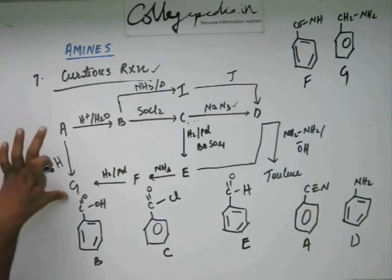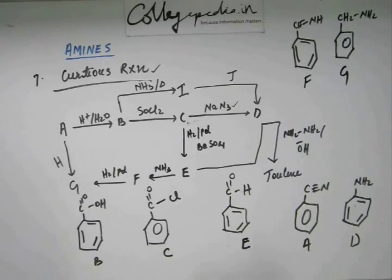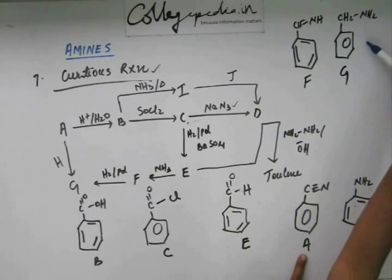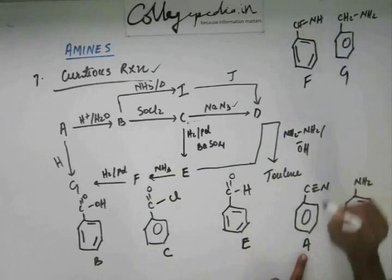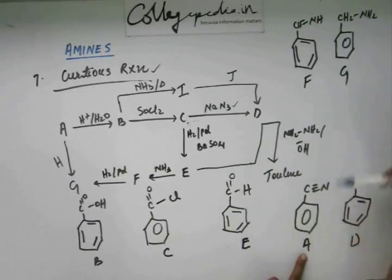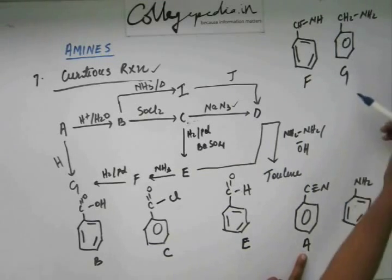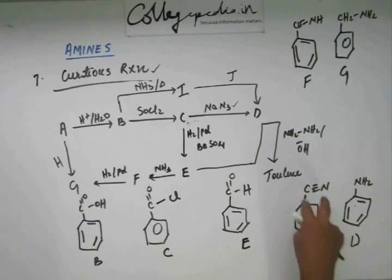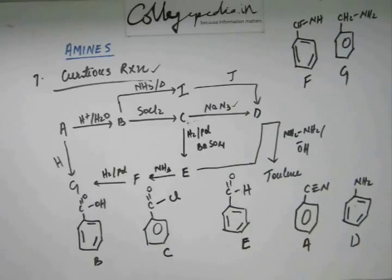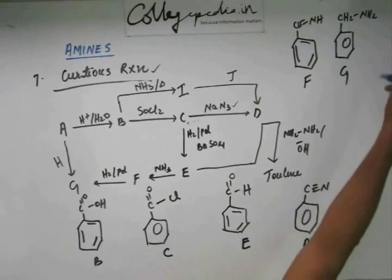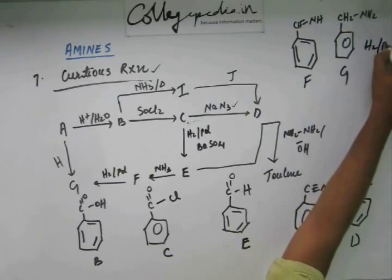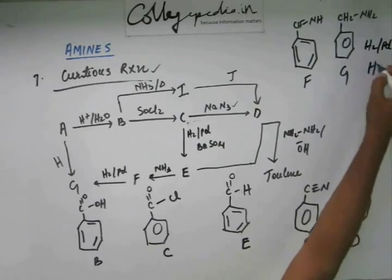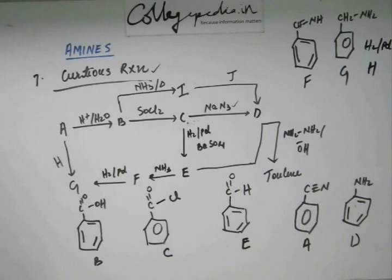Now you could have got G from A directly if you would have added H. Here you have A and here you have G. Now you tell me what you have to add to get G from A. From this compound you can get this directly if you just carry out hydrogenation reaction. If you just carry out hydrogenation reaction this will be reduced and you will get G. So you will get benzylamine from this cyanobenzene. So that H should be H2Pd or if you like nickel you can add nickel or if you have a liking for Platinum you can add Platinum.